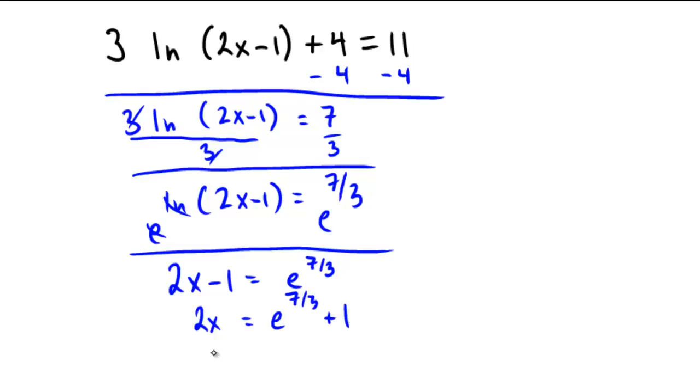And then finally divide by 2. So our final answer is going to be x equals e to the 7 thirds plus 1 all over 2. Again, just for a little bit of extra, if you wished to put this into a calculator and figure out what the numerical, the decimal answer is, e to the 7 thirds plus 1 divided by 2 to 2 decimal places of accuracy would be 5.66.